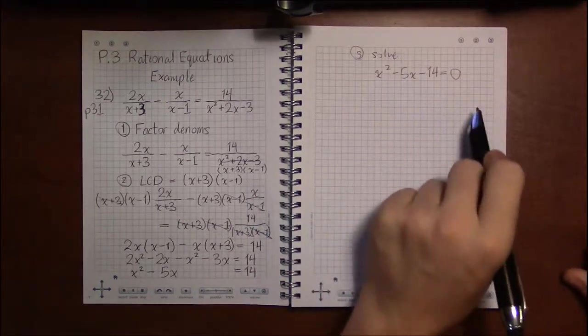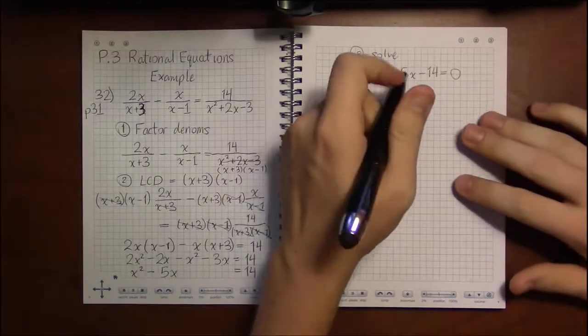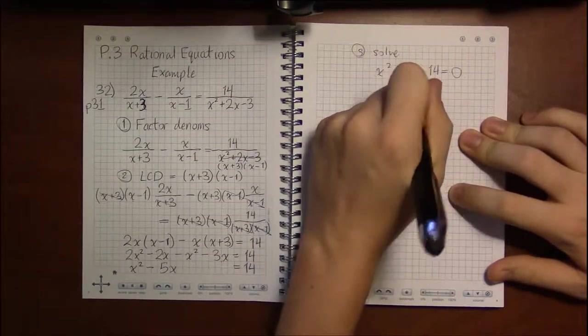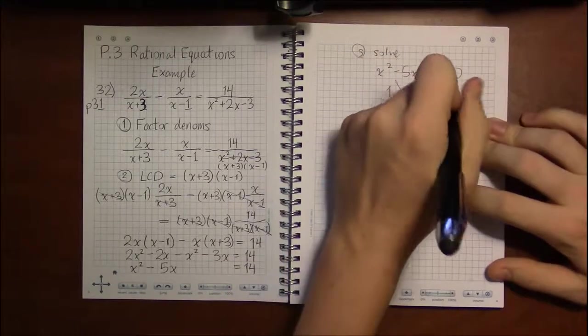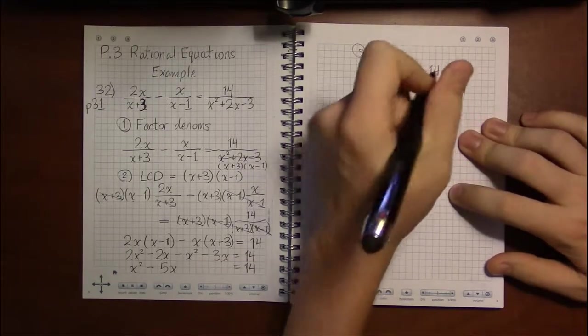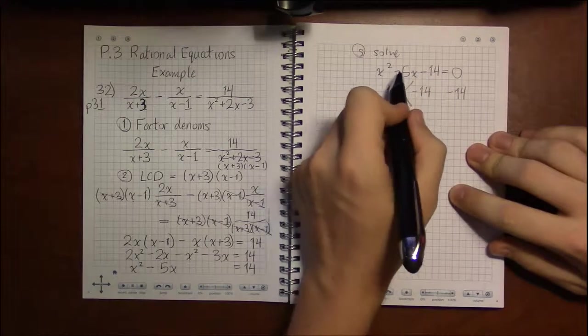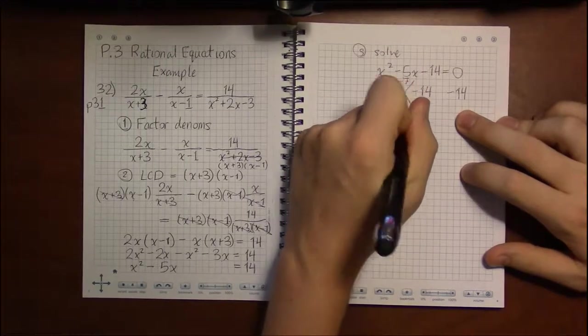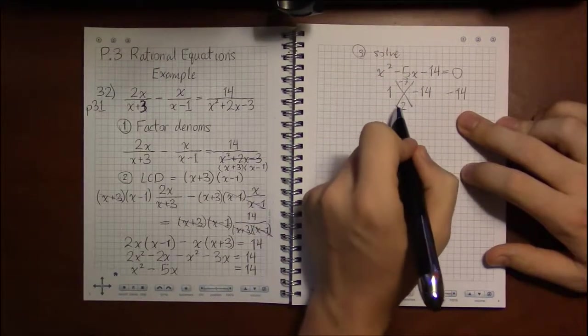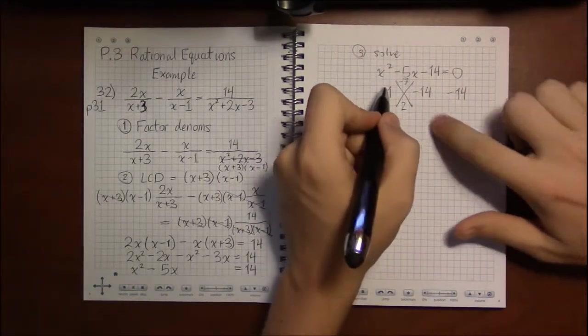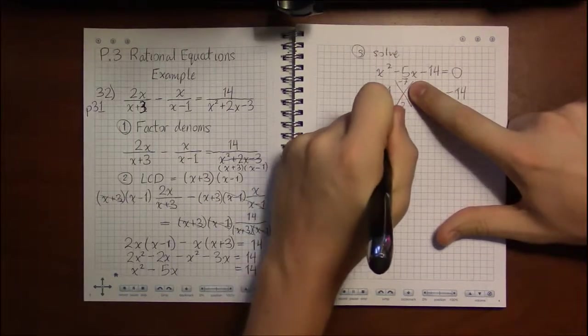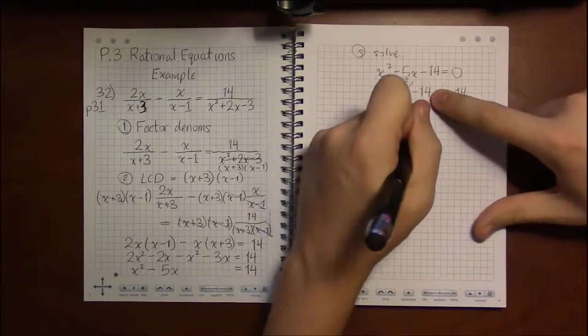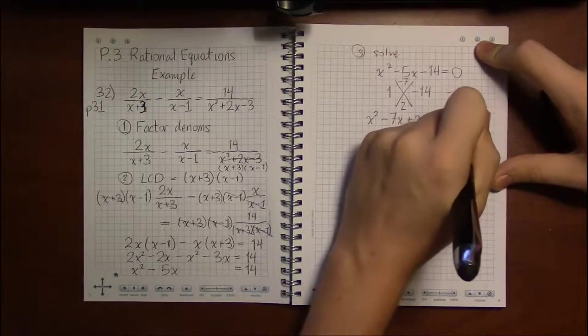So we have x squared minus 5x minus 14 equals zero. Are we going to be lucky enough to have this factor? Let's see. Leading coefficient is 1. Constant term is minus 14. Those multiply together to a minus 14. And can we get factors of minus 14 that add up to minus 5? How about minus 7 and 2? Minus 7 plus 2 is minus 5. Minus 7 times 2 is minus 14. So we're going to have x squared, 1x squared, minus 7x, plus 2x, minus 14. And that equals zero.